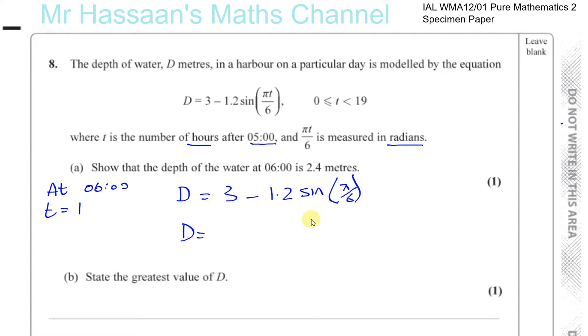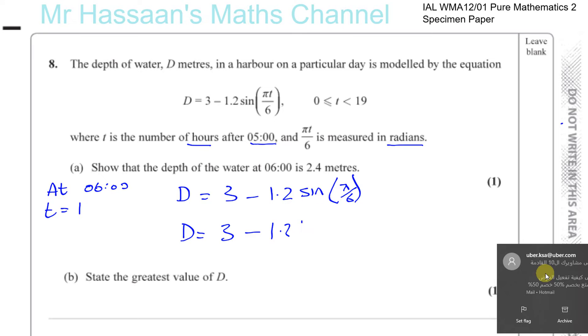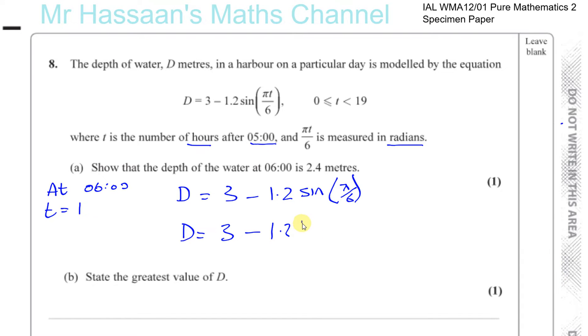Pi over 6 is 30 degrees. Sine of 30 degrees is a half. So it's 3 minus 1.2 times a half, which equals 3 minus 0.6, which is 2.4 meters.